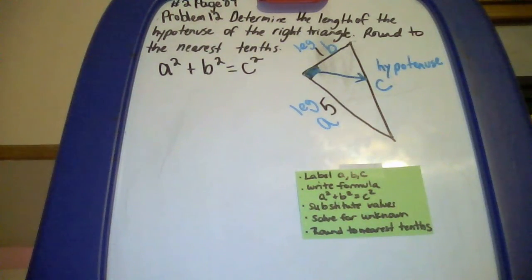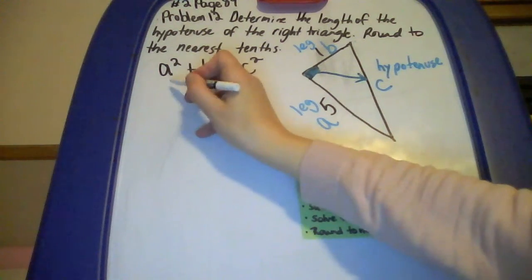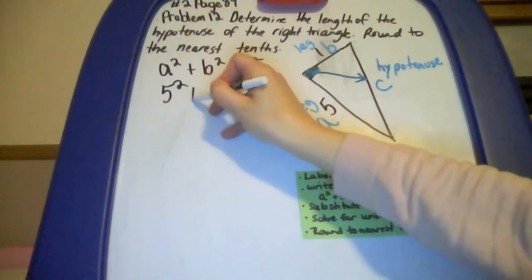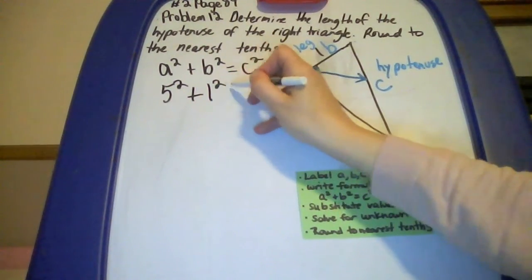Then I'm going to substitute my numbers in. A is 5, B is 1, and C is unknown.